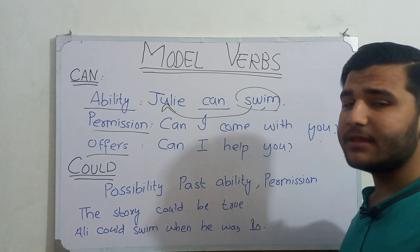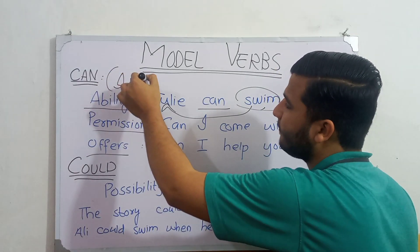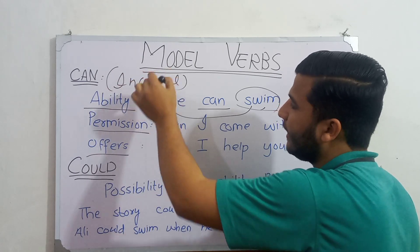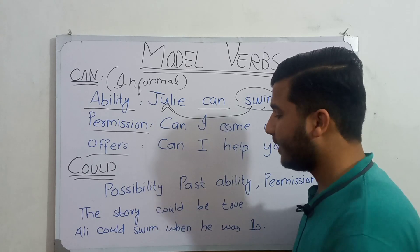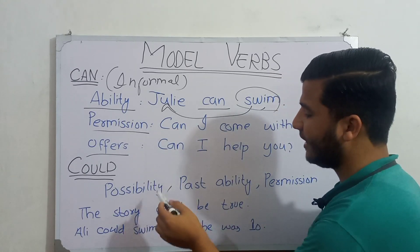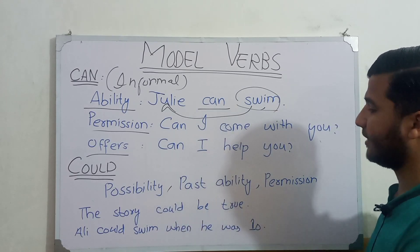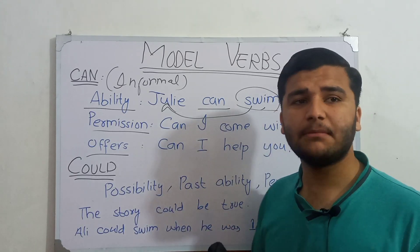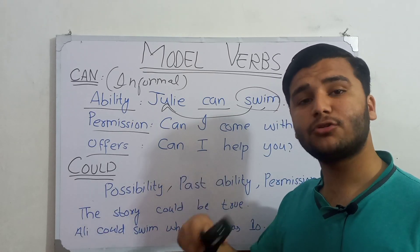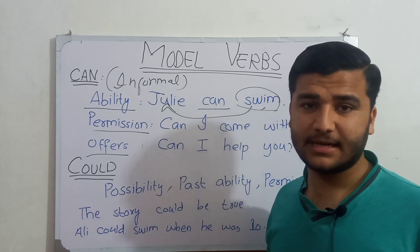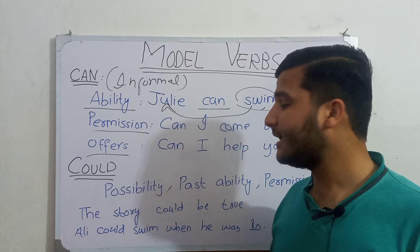One important note: 'can' is informal. If you want to use the formal version, you may use 'could.' Now we will talk about 'could,' which also has three functions in English grammar. The first is possibility. Possibility means something may happen — whenever you are estimating or predicting something, we use 'could' for that.